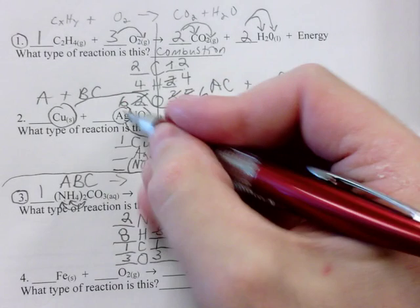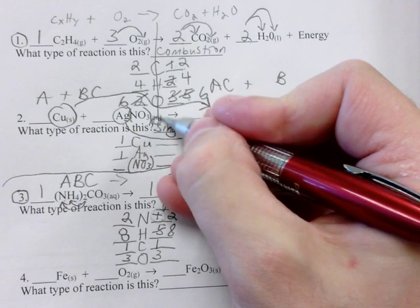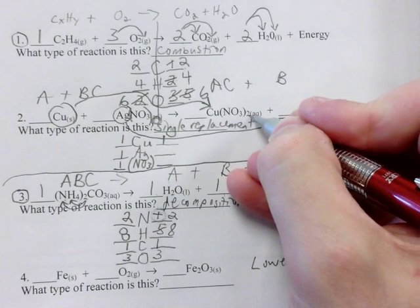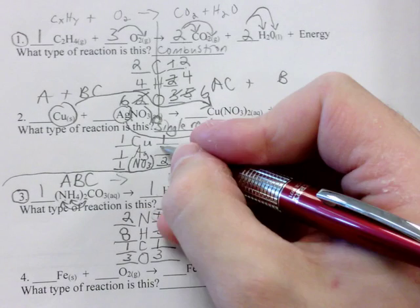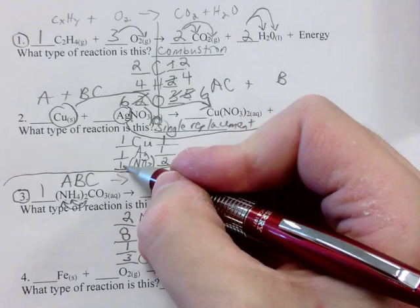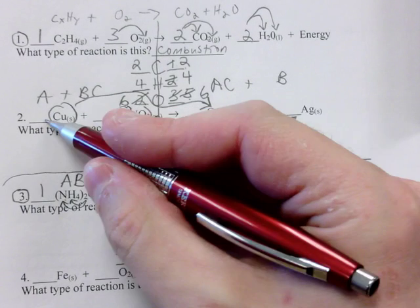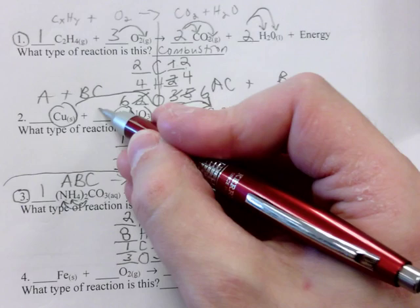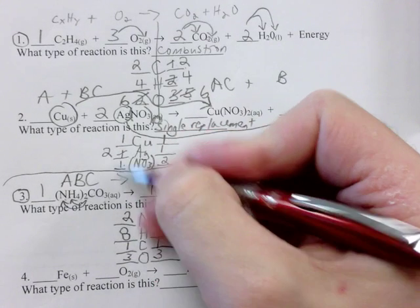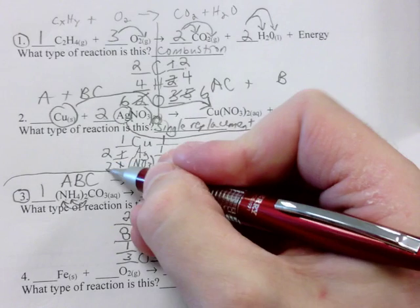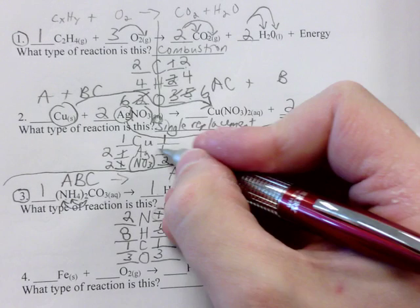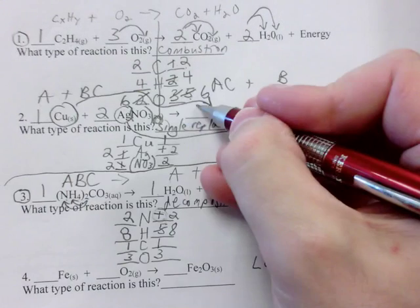With the shortcut method, I keep track of three things: Cu's, Ag's, and NO3 as its own unit. Left side: 1 Cu, 1 Ag, 1 NO3. Right side: 1 Cu, 2 NO3's (subscript 2 after the parenthesis), 1 Ag. I need to fix the NO3's first. Step 2A: go to the side with less. Step 2B: pick the blank with NO3's. Step 2C: put a 2 there — 2 times 1 is 2 Ag's; 2 times 1 is 2 NO3's. Now fix Ag's: put a 2 in that blank — 2 times 1 is 2 Ag's. Put a 1 in any remaining blanks. All balanced.